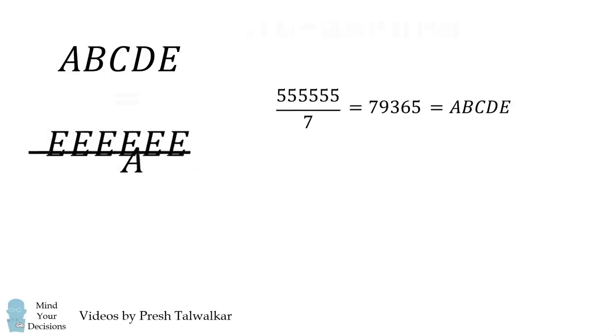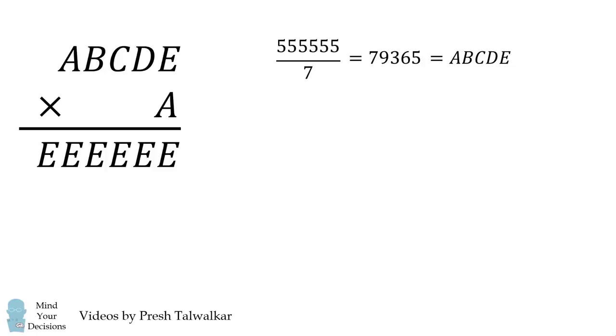Here is the case that works. And therefore we have ABCDE multiplied by A is equal to EEEEEE. And the number ABCDE is A is equal to 7, B is equal to 9, C is equal to 3, D is equal to 6, and E is equal to 5. And that's the answer to this problem.